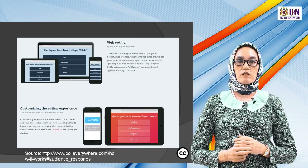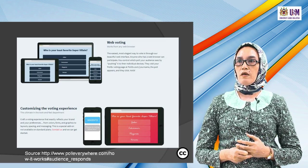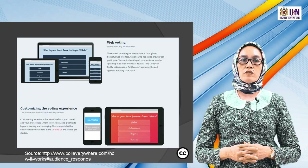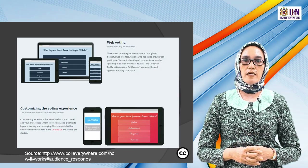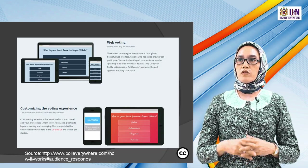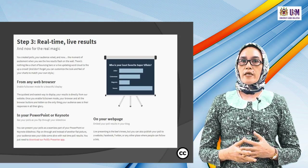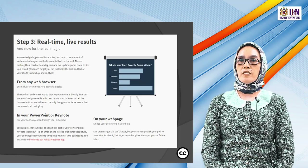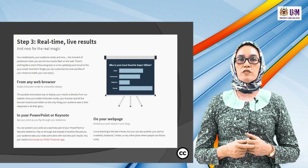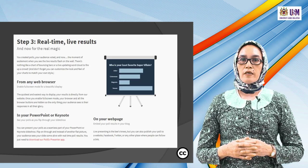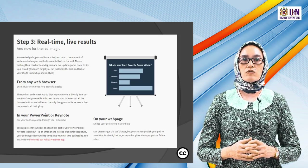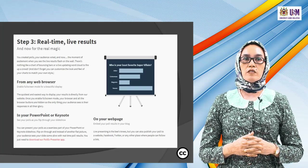You can customize the voting experience — the look and feel of Poll Everywhere. Craft a vote experience that exactly reflects your brand preferences, from colors, fonts, and graphics to layout, spacing, and message. Poll Everywhere is also real time — you can get live results. When your audience votes, you see live results flash on the wall: charts, bouncing bars, or live-updating word clouds.